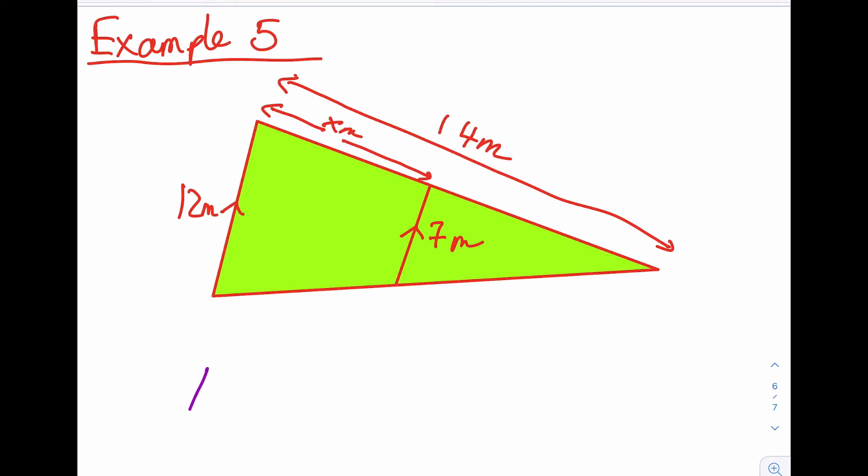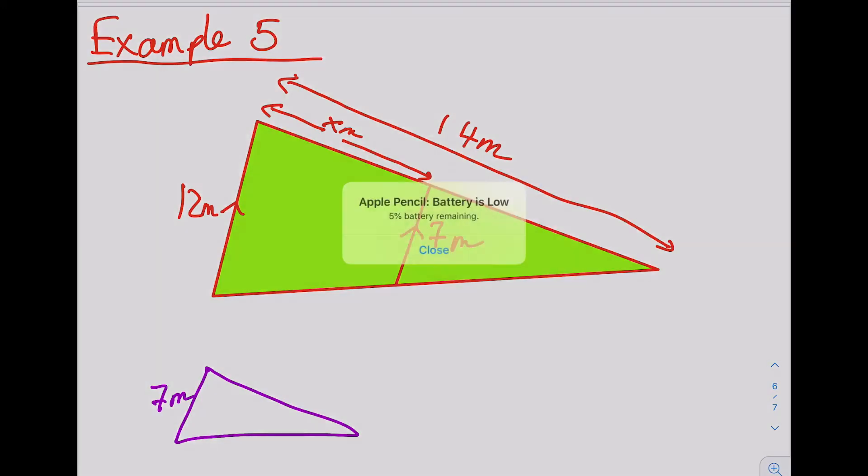So draw a small triangle first, just a sketch. We have got 7 meters on the base and we need another side. Now we don't have another side because we don't really know this side, but what we do know is it is 14 all the way minus X.